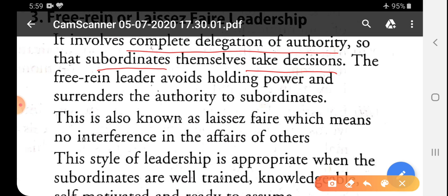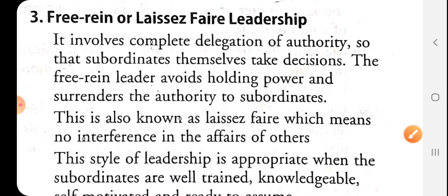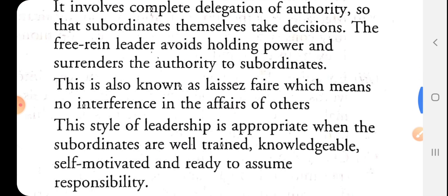In autocratic leadership, the leader himself took decisions. In democratic leadership, the leader took decisions but after taking suggestions from subordinates. But in free reign and laissez-faire leadership, the leader does not take decisions at all — the right to make decisions belongs to the subordinates. The leader completely distributes his authority among subordinates. The free reign leader avoids holding power and surrenders authority to subordinates. This is also known as laissez-faire, which means no interference in the affairs of others. This style is appropriate when subordinates are well trained, knowledgeable, self-motivated, and ready to assume responsibility.